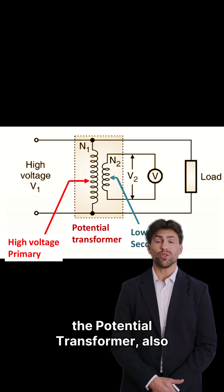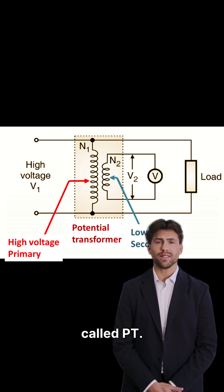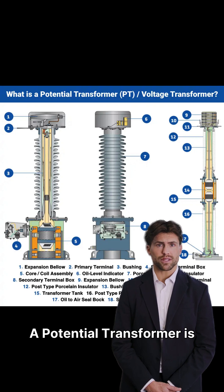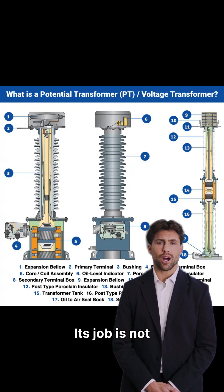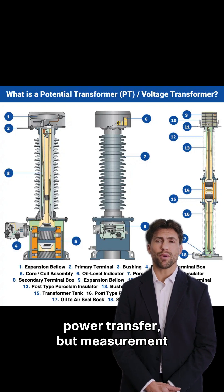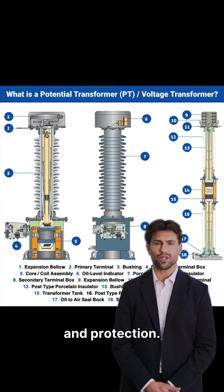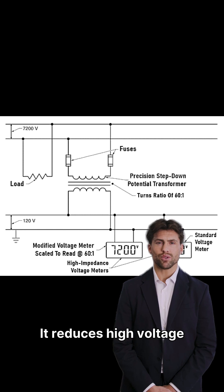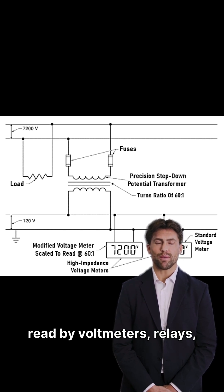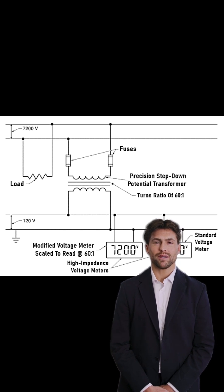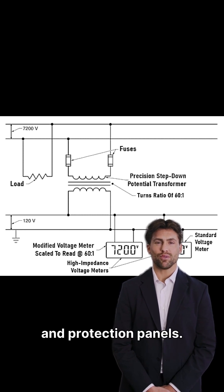Now let's talk about the potential transformer, also called PT. A potential transformer is a special type of voltage transformer. Its job is not power transfer, but measurement and protection. It reduces high voltage into a safe, exact value that can be read by voltmeters, relays, and protection panels.